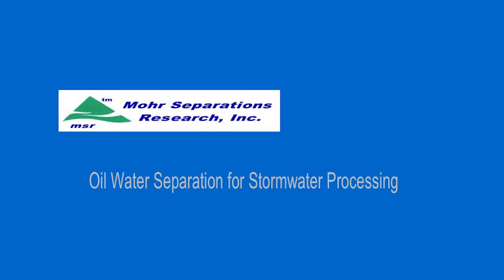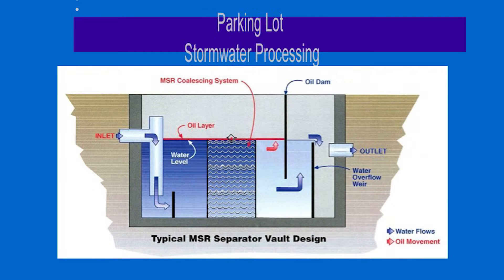This is a typical parking lot stormwater processing system. There is some oil in stormwater from parking lots because you can see the rainbows on top of the oil. The inlet is on the left, the water goes down and under, and it hits the grit baffle there and bounces over and goes through the media.